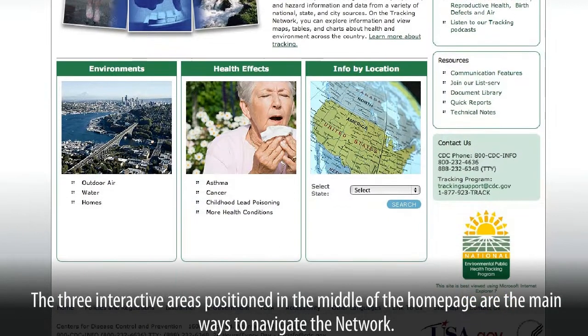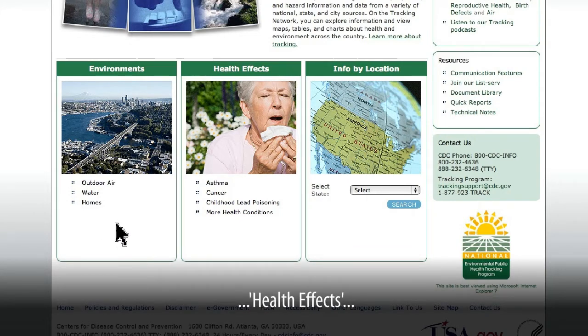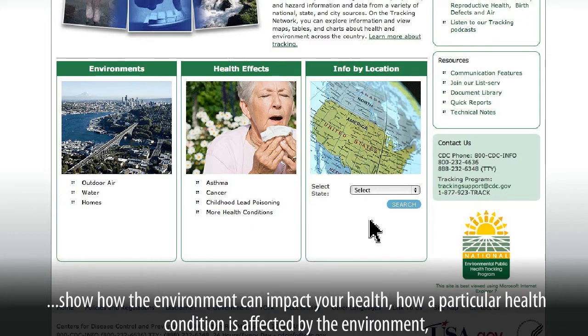The three interactive areas positioned in the middle of the homepage are the main ways to navigate the network. These three sections — Environments, Health Effects,